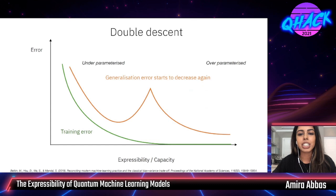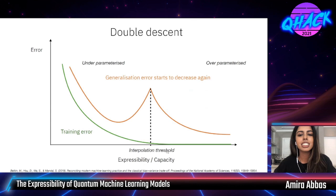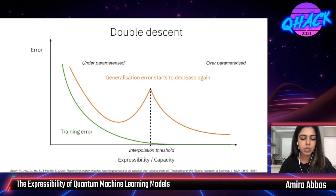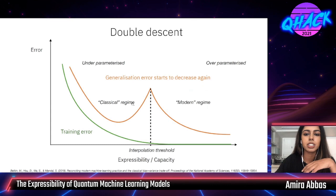Why does double descent happen? The intuition is beautiful. When you push past a certain capacity you reach the interpolation threshold: your model has memorized all the training data, and then if you keep going it starts to interpolate between your data points — imagining all possible other data points — and so the generalization error starts to decrease again. This is so prolific that classical machine learning theory has now divided deep learning into two regimes: a classical regime (the standard bias-variance tradeoff) and a modern regime corresponding to modern deep learning.